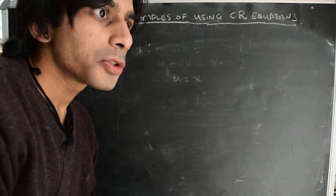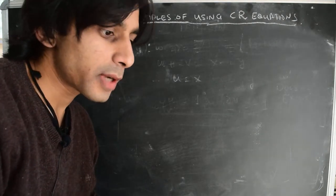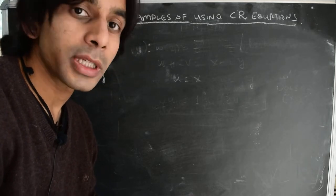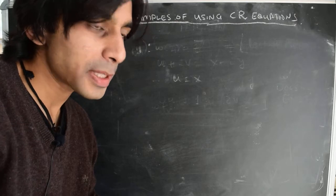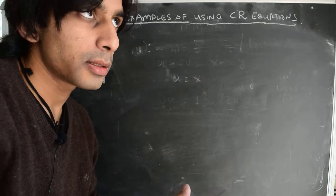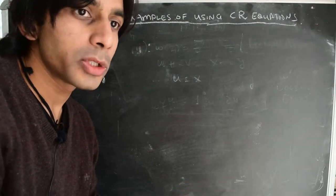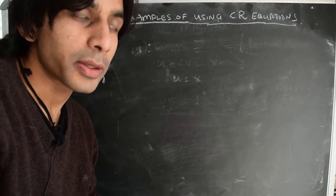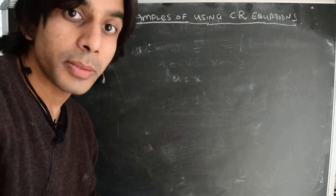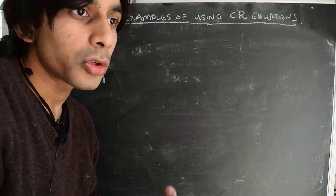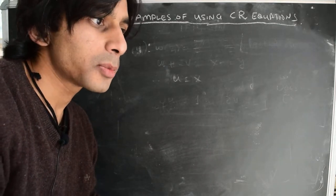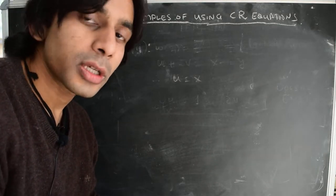Hi there. In the previous few videos, we have derived the Cauchy-Riemann equations and in particular, in one of the previous videos, we specifically checked for the mappings W(z)=z, the identity mapping, and W(z)=z̄. We checked both geometrically that W(z)=z is analytic, whereas W(z)=z̄ is not analytic. We've also seen this through the Cauchy-Riemann conditions: for W(z)=z the conditions are satisfied and one can meaningfully define a derivative, whereas for W(z)=z̄ the Cauchy-Riemann conditions are not satisfied.